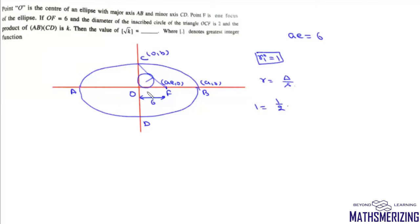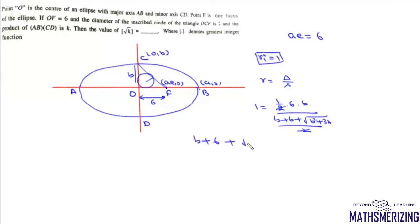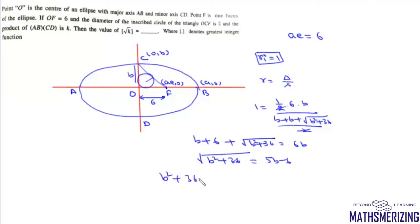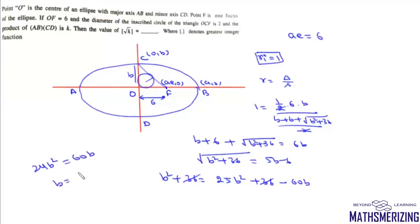The area of triangle OCF is (1/2)·ae·b = (1/2)·6·b = 3b. The semi-perimeter s = (b + ae + √(b² + a²e²))/2 = (b + 6 + √(b² + 36))/2. Setting r = 1, we get √(b² + 36) = 5b - 6. Squaring: b² + 36 = 25b² + 36 - 60b, so 24b² = 60b, giving b = 5/2.